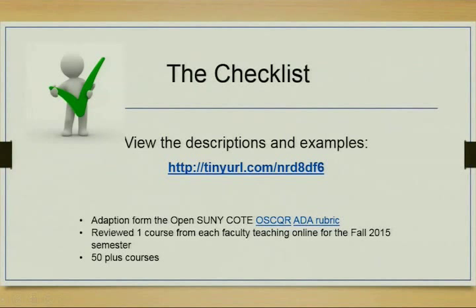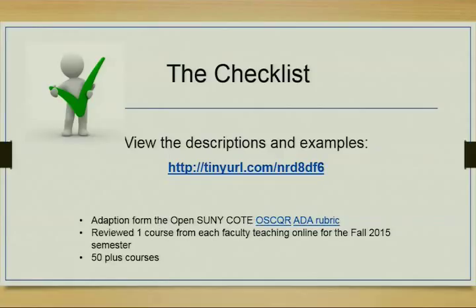So we created a checklist. The grant allowed me and a staff member to go over courses in the summer and check them. We have about 150 online courses but only about 45 to 50 people teaching them. We had to make sure faculty realized this was not a course review — our course review process is voluntary and peer-based. This is a compliance check.